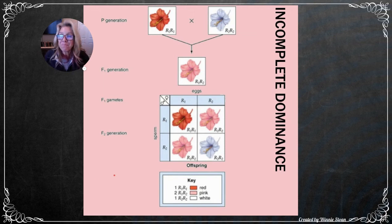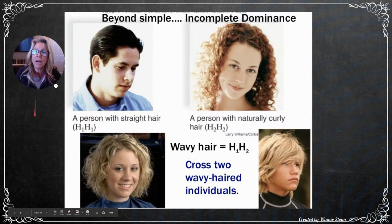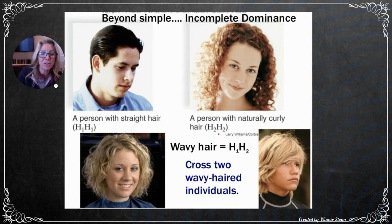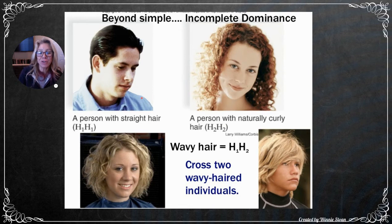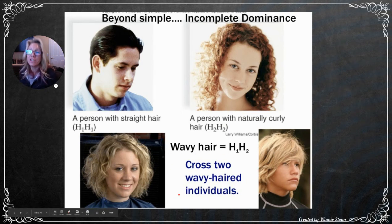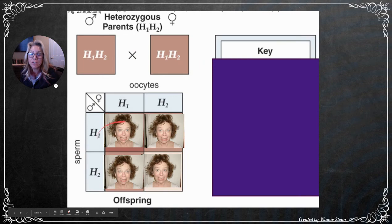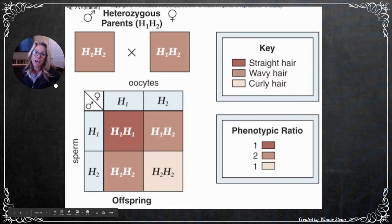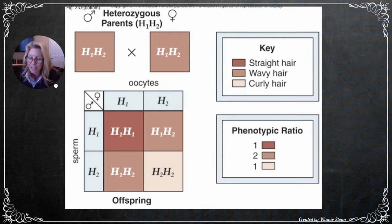Incomplete dominance definition: when a heterozygote has an intermediate phenotype between that of either homozygote. Another example is hair texture: straight hair is H1 H1, curly hair is H2 H2. Cross a straight-haired person with a curly-haired person and all offspring have wavy hair (H1 H2). Crossing two wavy-haired individuals gives: one in four straight, two in four wavy, one in four curly.